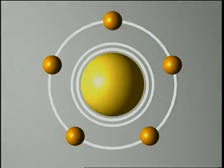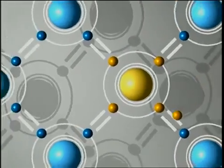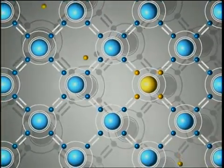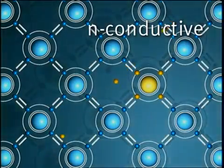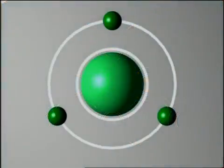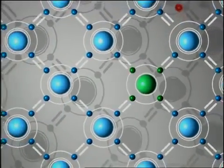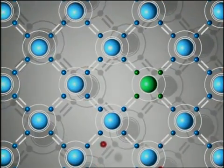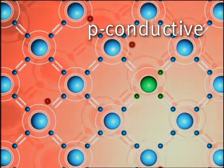Phosphorus has five outer electrons. The fifth phosphorus electron built into each molecule of the silicon crystal lattice can move freely. Because of this structure, the silicon-phosphorus crystal is negatively charged, or N-conductive. Boron atoms, on the other hand, have only three outer electrons. When they are built into the silicon lattice, one silicon electron is missing. This creates electron holes, which move through the crystal like positively charged electricity particles. The material is positively charged, or P-conductive.